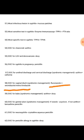Drug of choice for bubo (syndromic management) is azithromycin plus doxycycline. Drug of choice for genital ulcer: if vesicle, use acyclovir; if not vesicle, use azithromycin plus benzathine penicillin. Drug of choice for neurosyphilis is crystalline aqueous penicillin. For penicillin allergy in syphilis, it is doxycycline.